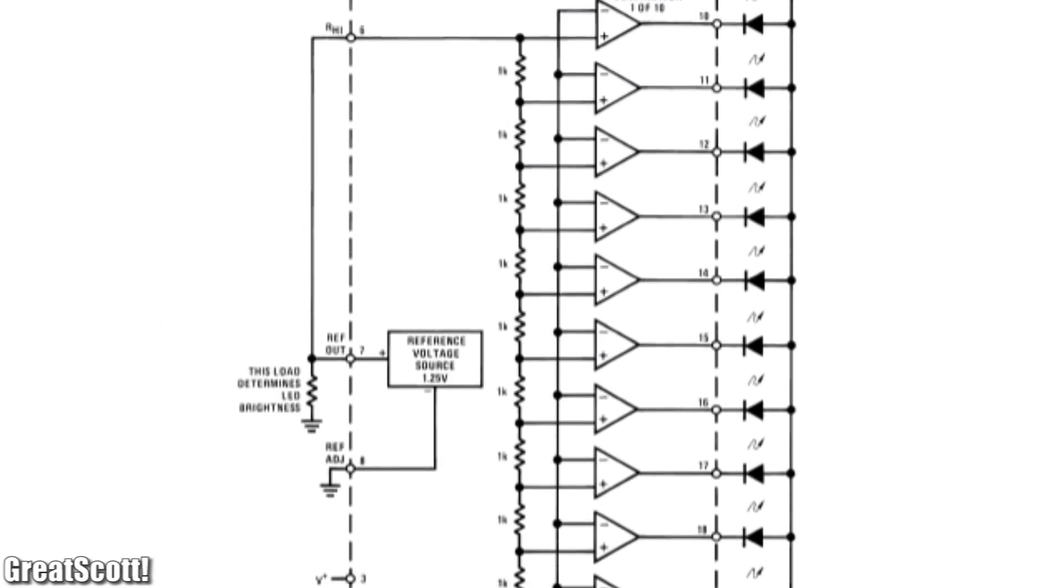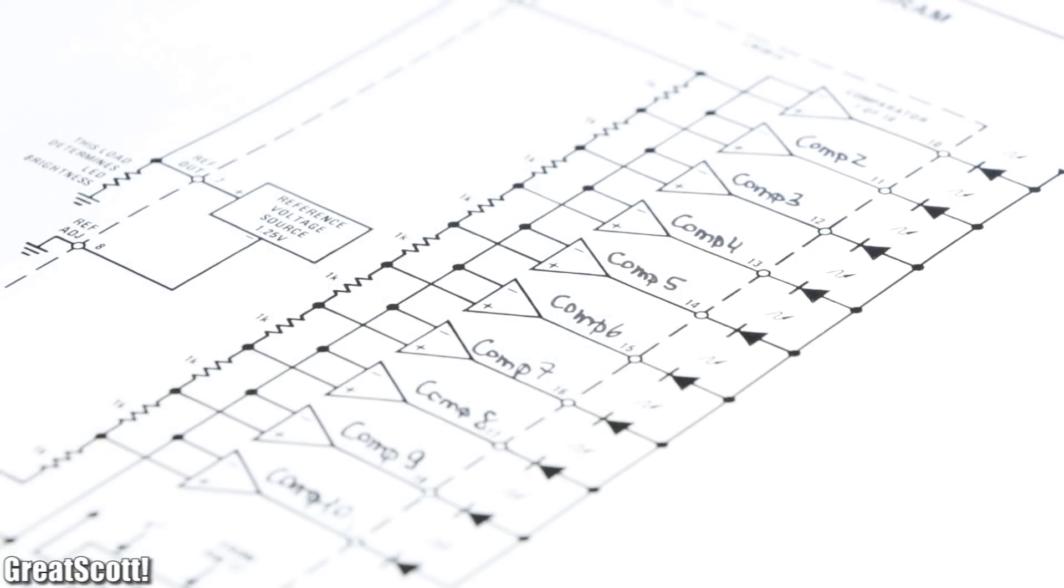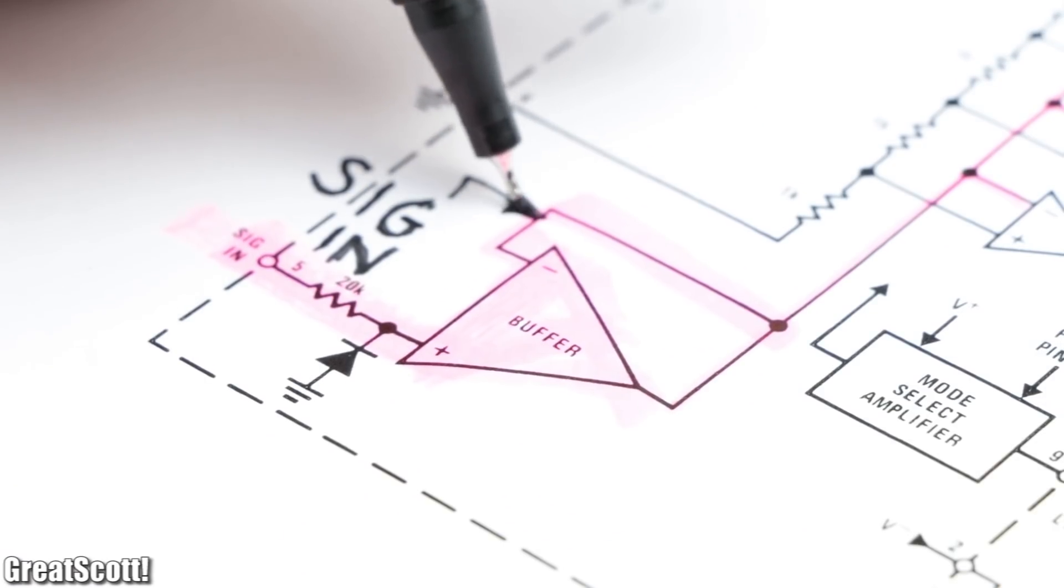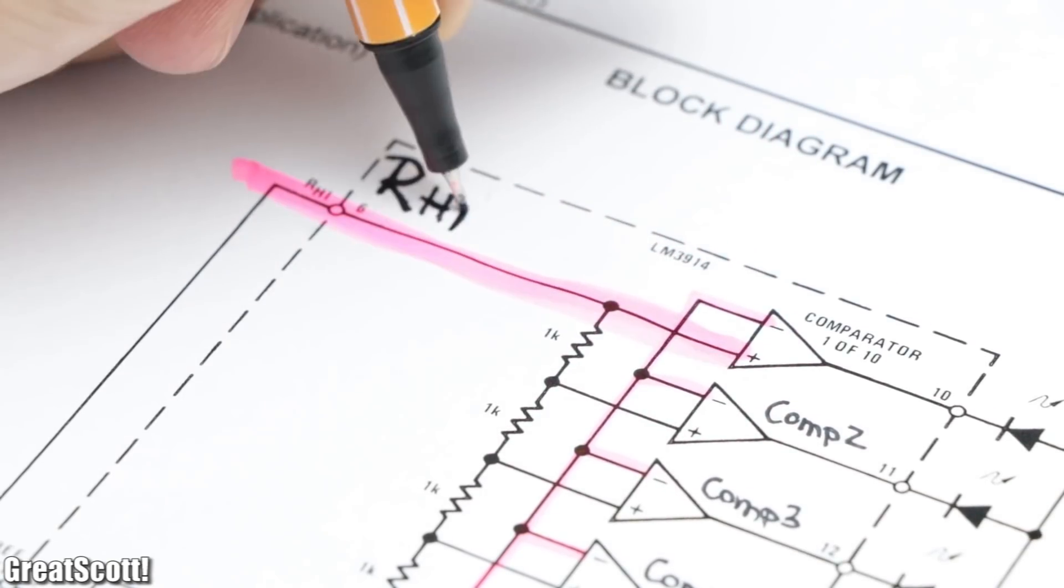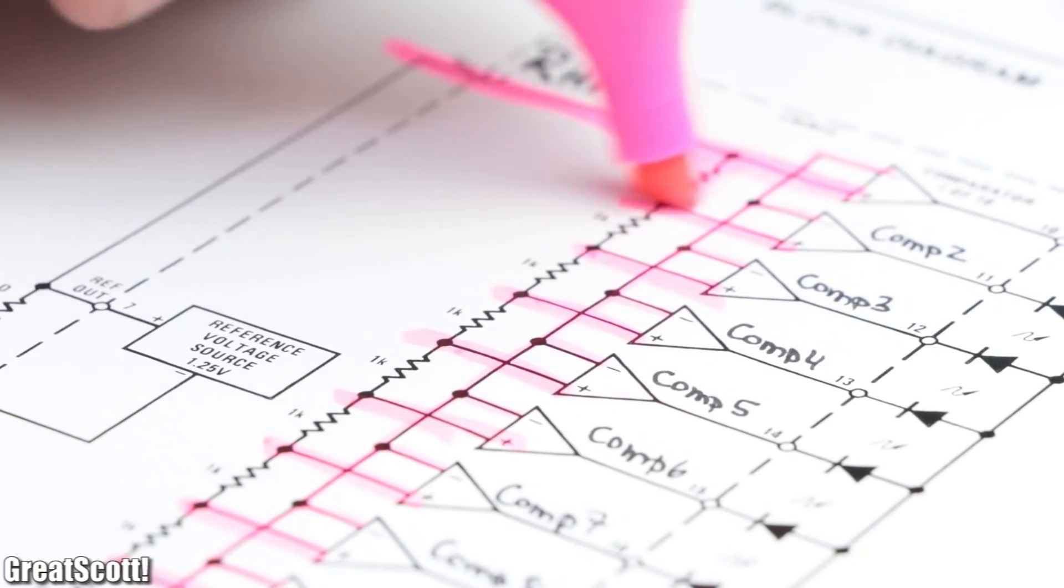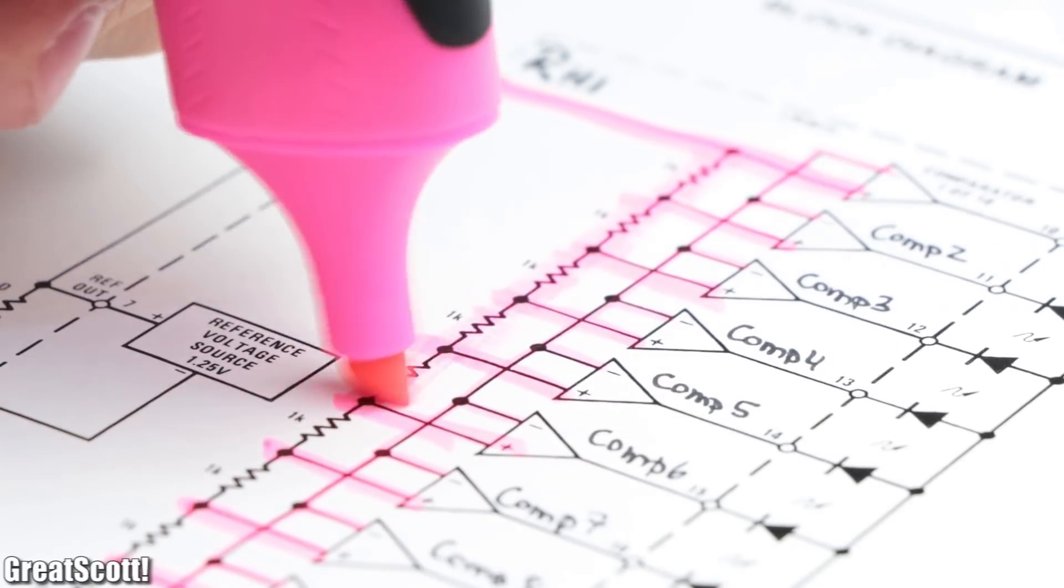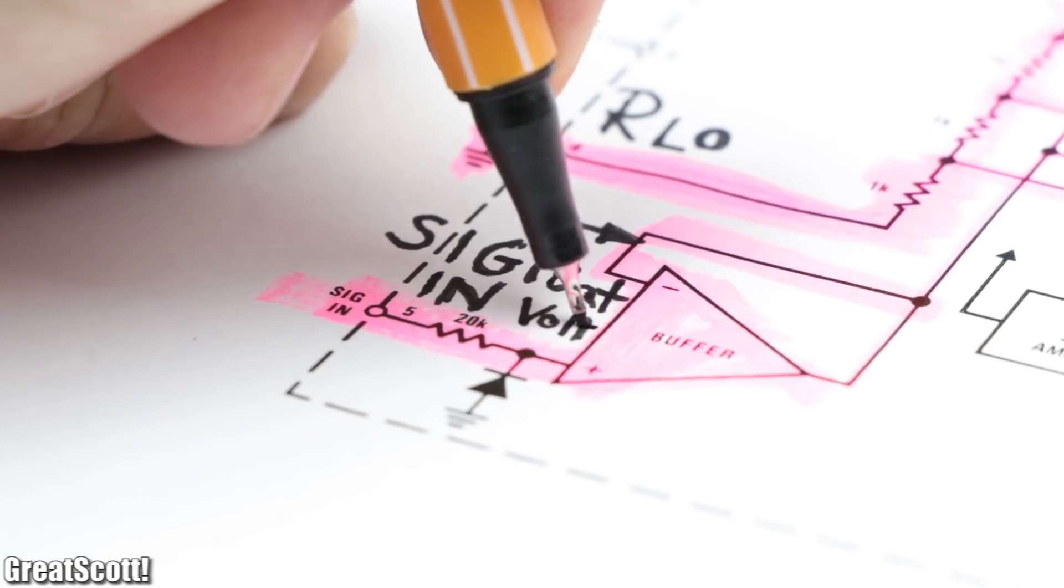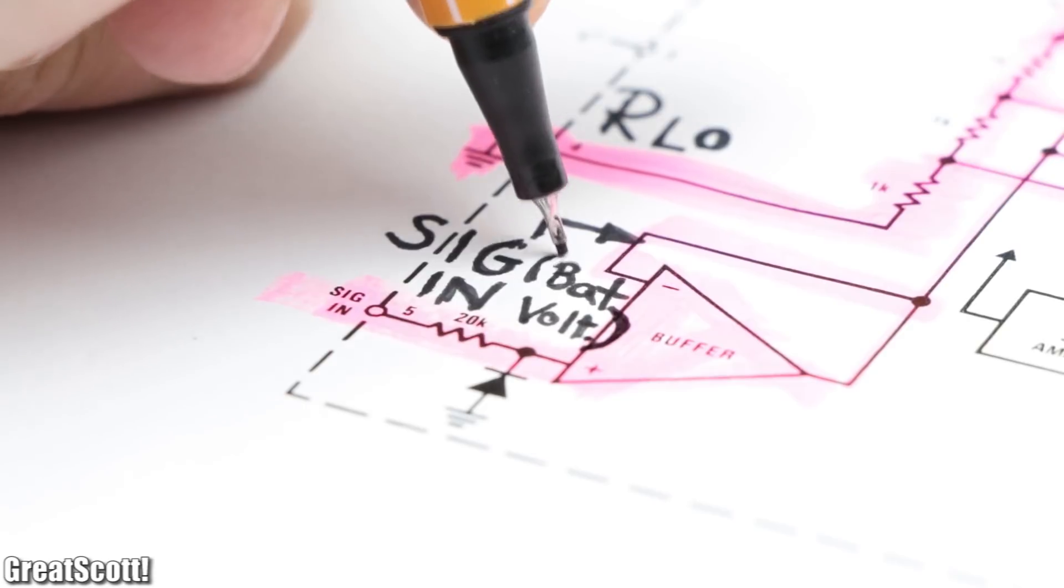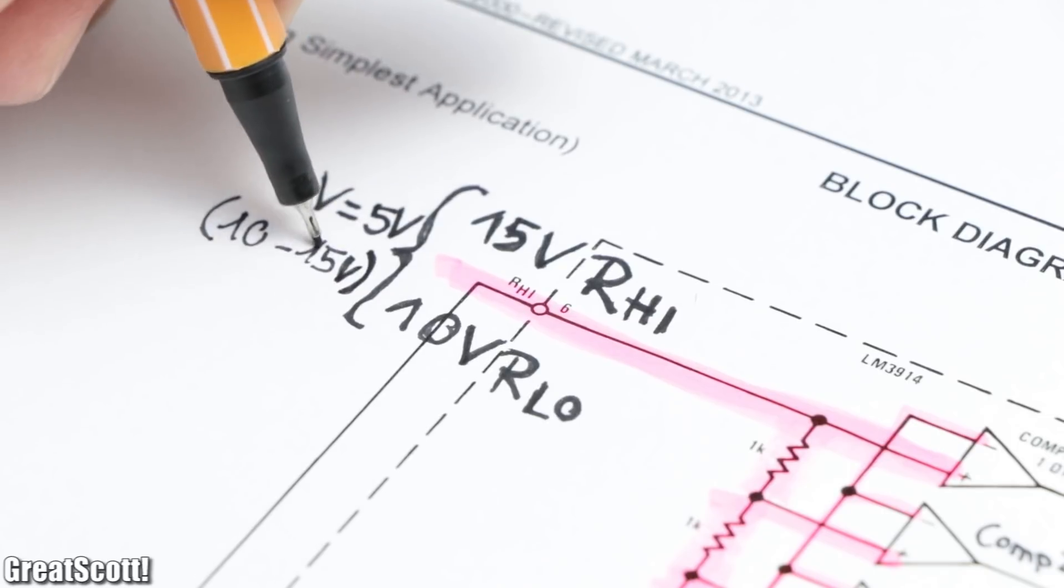To learn more about it, let's look at the block diagram of the IC. In a nutshell, we got 10 comparators to whose inverting input the SIG, aka signal pin, is connected. The non-inverting input of the upper comparator is connected to the RHI pin, while the following ones are all connected to the previous non-inverting input through a 1 kilohm resistor. And the last resistor is connected to the RLO pin. Now the signal pin usually connects to the changing analog voltage, so the battery voltage, while the RHI and RLO pins are connected to the voltage potential window we want to cover.